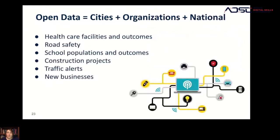We get data from different places. We talked about the government and ministries, but we also get data from organizations like the World Bank, and we get data from cities. For instance, school data can come from individual schools, but also from the national government and organizations that support schools like UNICEF. At each of those different levels, the data collection and publication will look different. If you're having trouble finding the data you need, it's important to look in multiple sources.